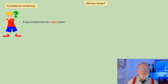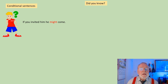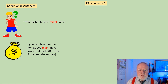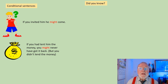Might is very useful to use in conditional sentences. If you invited him, he might come. If you had lent him the money, you might never have got it back. But in this situation, you didn't lend him the money — it didn't happen — so we can use might: you might never have got it back.